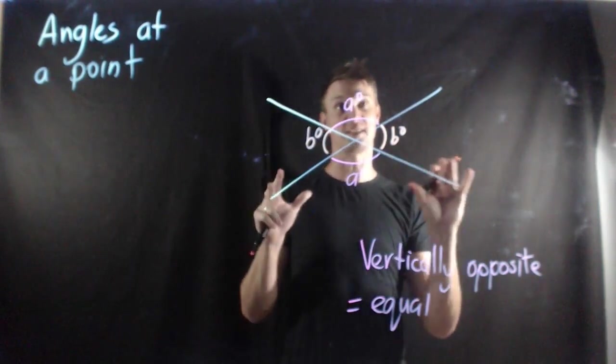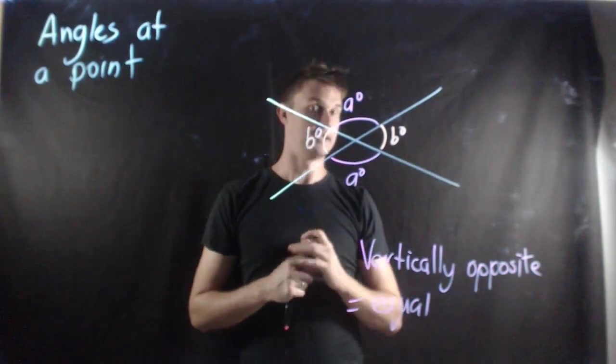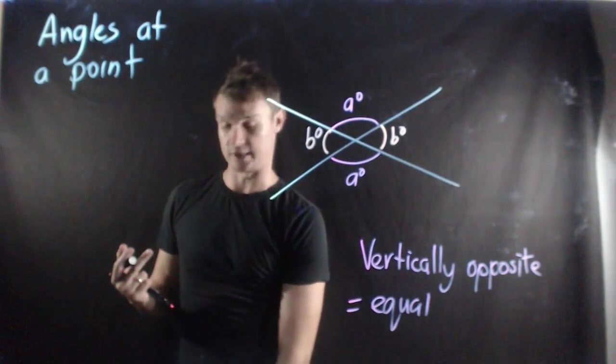So angles that are vertically opposite will be equal. Let's do a quick example so you get an idea of how to do that.